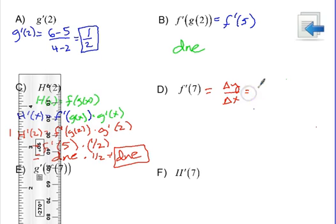And so that's going to be negative 1 over 2, and that is the slope of that line segment, which is f prime of 7.